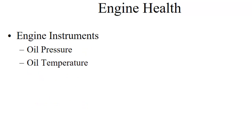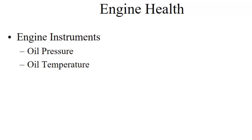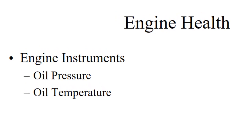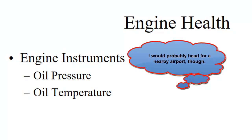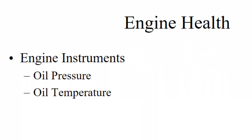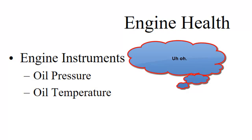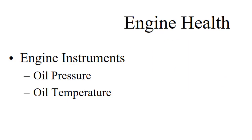We also have our engine instruments — oil pressure and oil temperature — and they need to be used together. If oil pressure goes to zero but temperature is staying the same, there's a good chance the problem is just a broken oil pressure gauge, and you wouldn't necessarily want to put the airplane down in a field over a faulty gauge. On the other hand, if the oil pressure drops and the temperature starts increasing, that indicates something may have gone wrong with your engine and you should be looking for a place to land — possibly considering an off-airport landing before the engine fails, while you still have options for a go-around or a controlled approach.